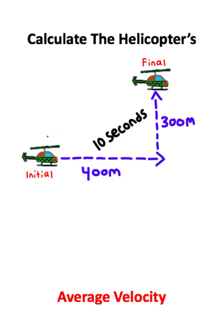Let's calculate the average velocity of this helicopter. The helicopter initially starts at this position. It travels 400 meters directly east, 300 meters directly north.